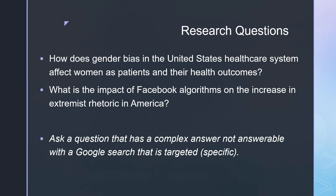Before we look at researching, let's take a look at what an effective research question looks like. An effective research question must have a complex answer that is not just answerable with a Google search. It should also be a targeted question with specific variables. One example for the medical field would be: how does gender bias in the United States healthcare system affect women as patients and their health outcomes?